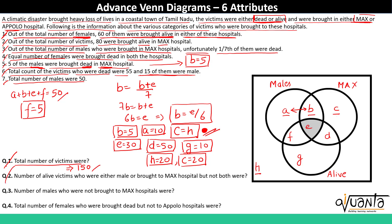Second question: number of alive victims who were either male or brought to Max hospital, but not both. Since we are talking about alive, we consider the alive set. Males and alive is region F; Max and alive is region D. We exclude E because it includes both males and Max together, which is not allowed. So F plus D equals 5 plus 50, which gives 55.